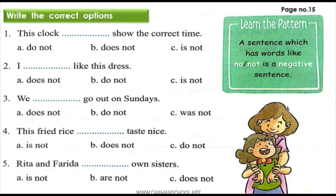We have an exercise: write the correct option. You have to pick the correct answer from A, B, or C. I will repeat the sentence: this clock dash show the correct time. The correct answer is: this clock does not show the correct time.